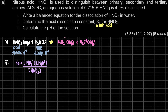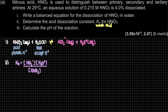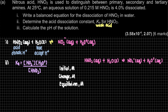Ka is the equilibrium constant, so all values must be at equilibrium. Right now, based on the information, we only have the initial HNO2 concentration of 0.215 M. We don't know the concentrations of the other species, so we have to do the ICE table. ICE stands for Initial, Change, Equilibrium — make sure to include the unit, molar.